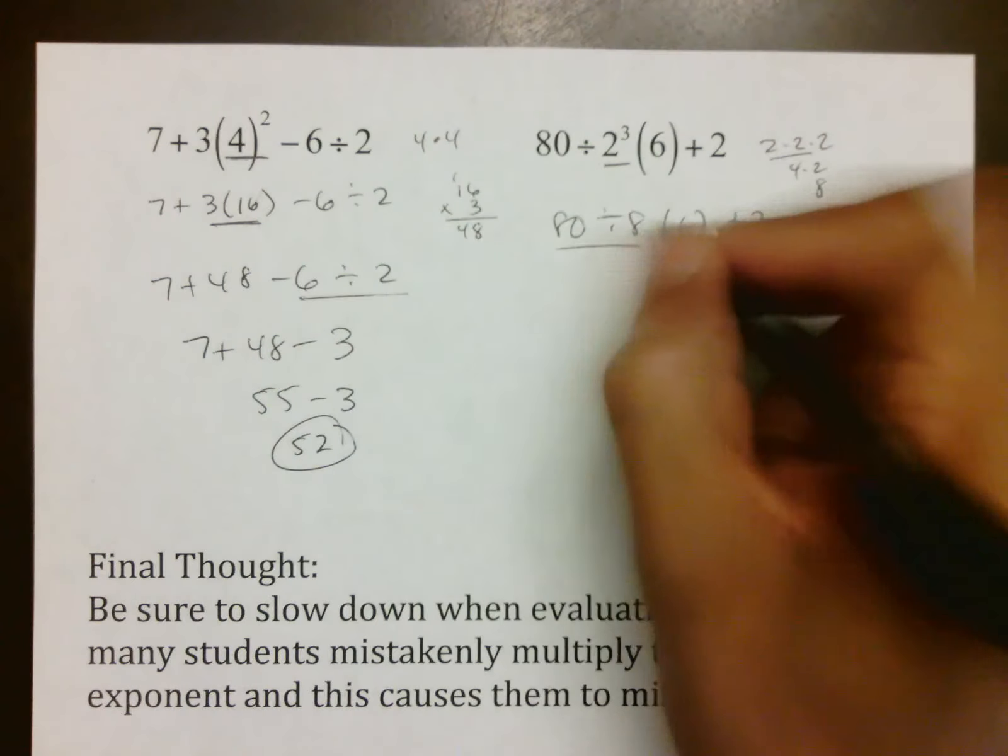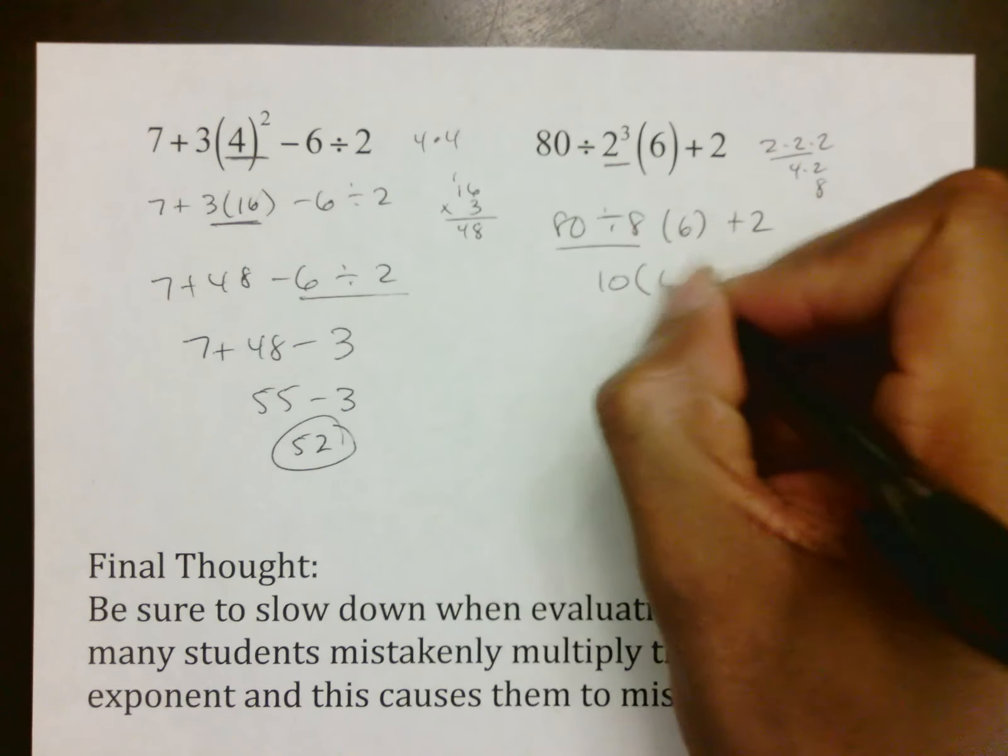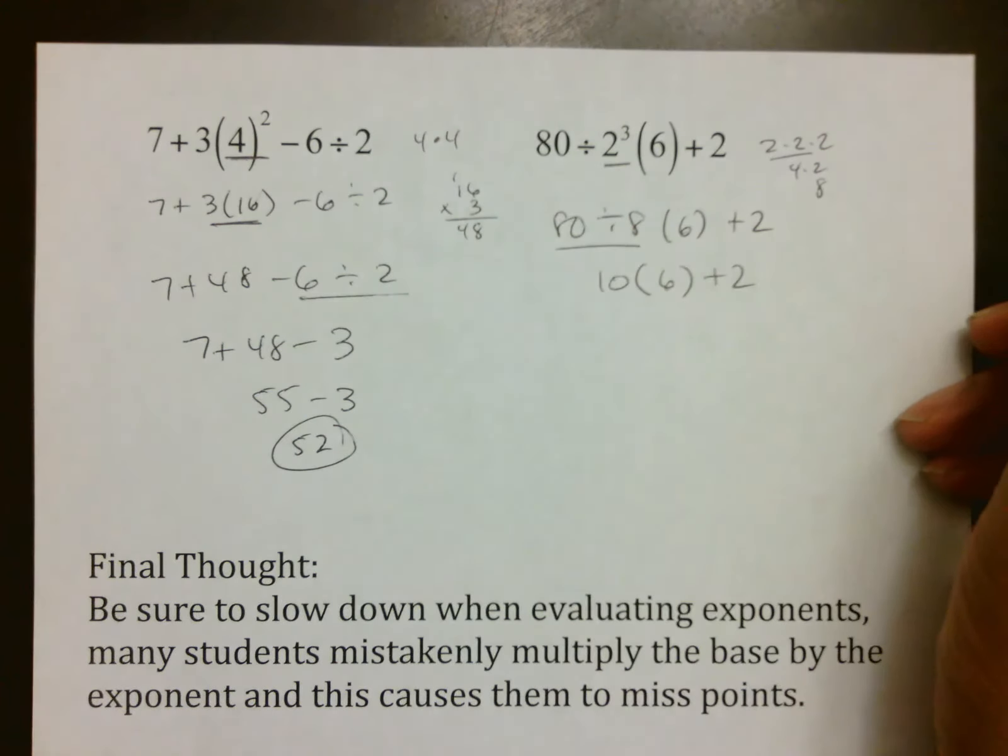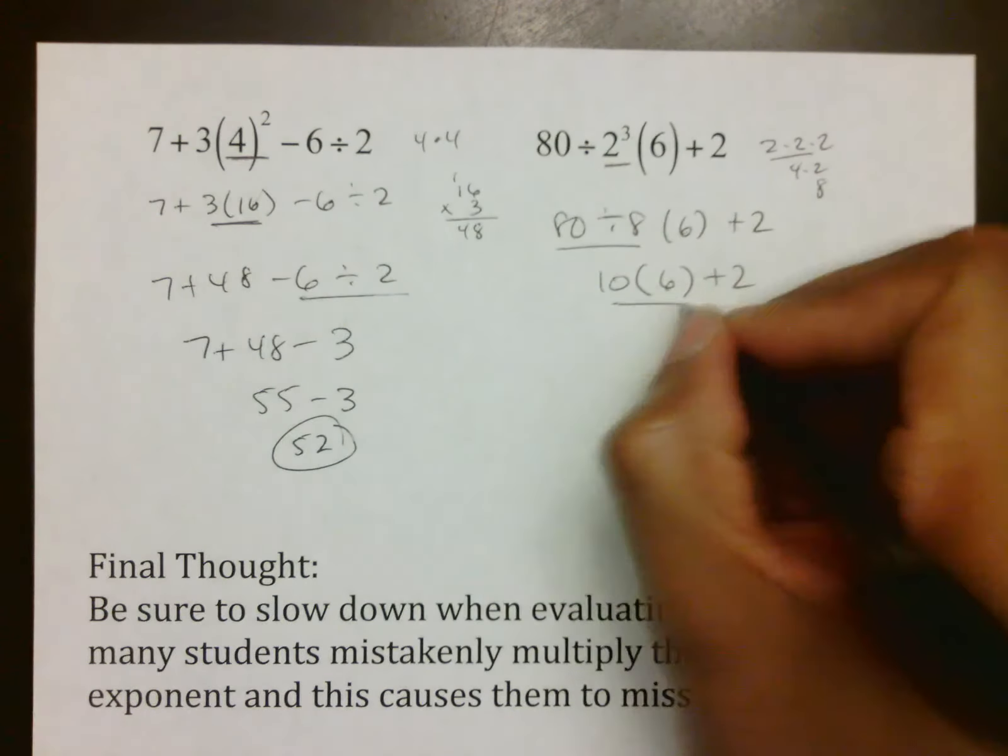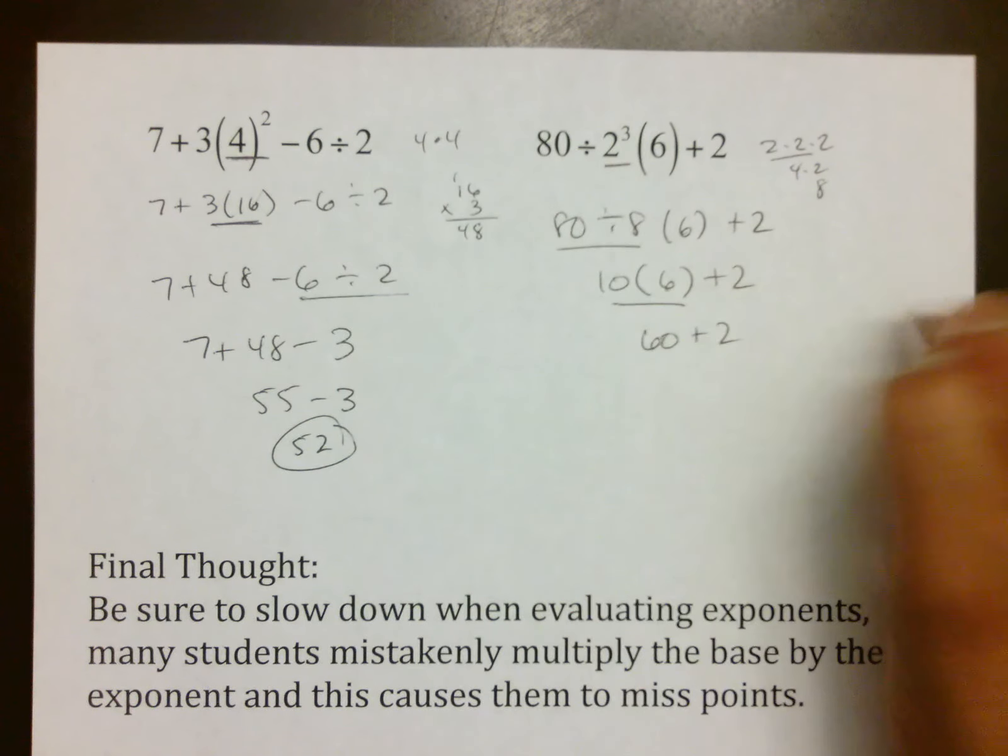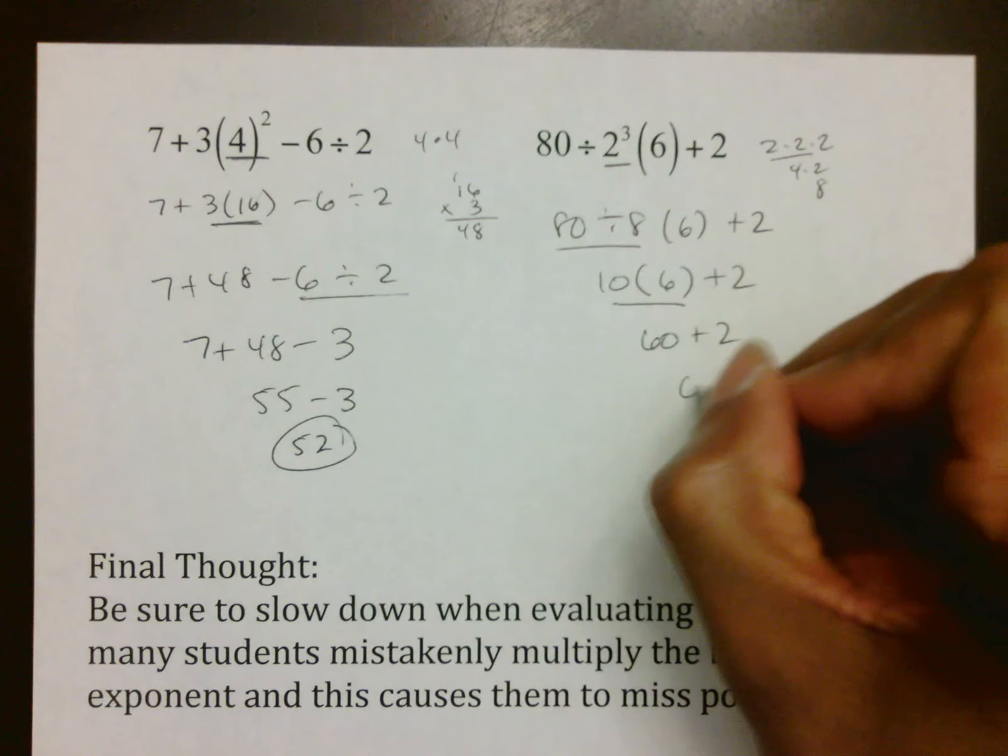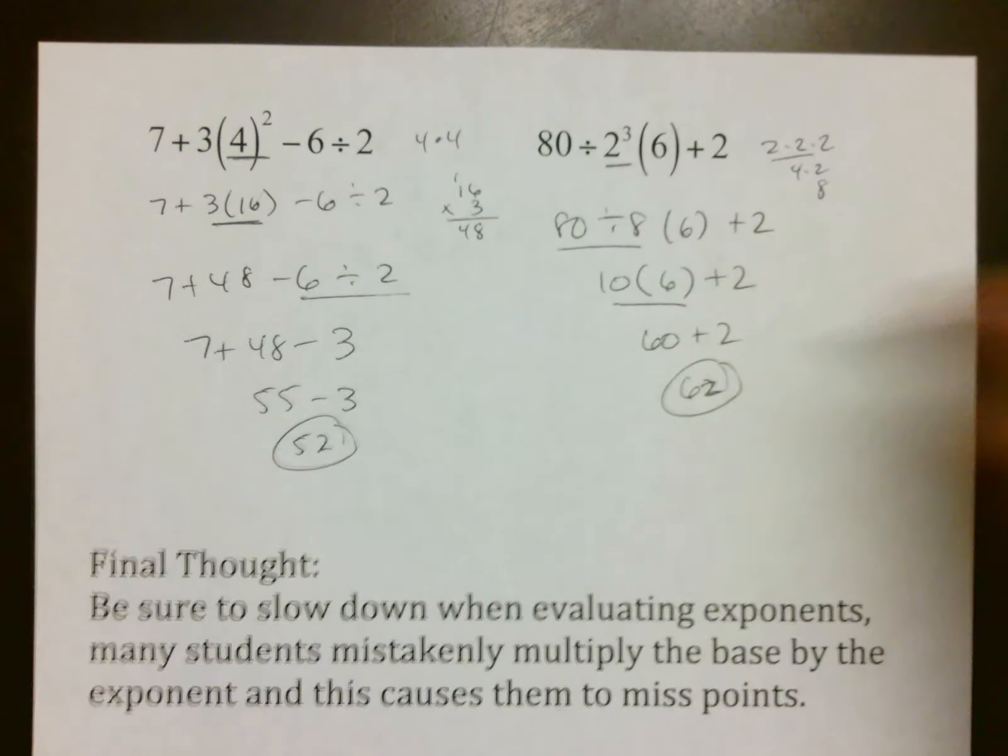First VIP in line is 80 ÷ 8, which is 10 × 6 + 2. First VIP in line is your multiplication, 60 + 2, which is 62 altogether.